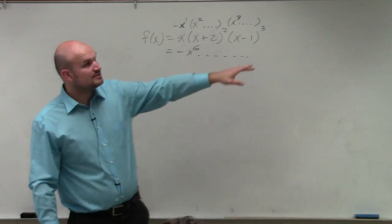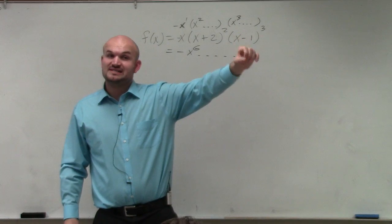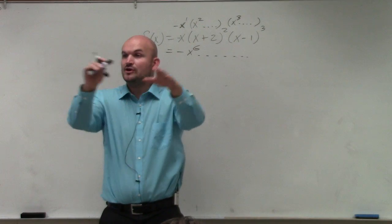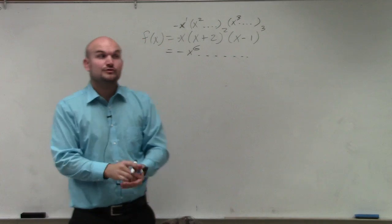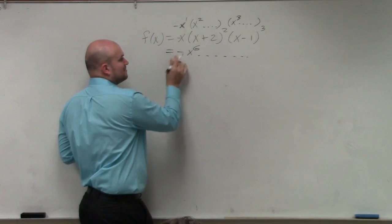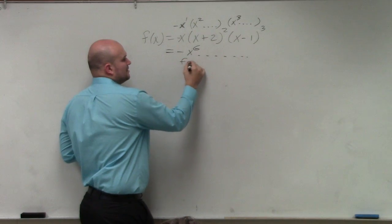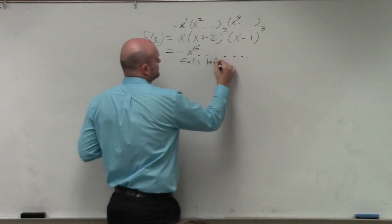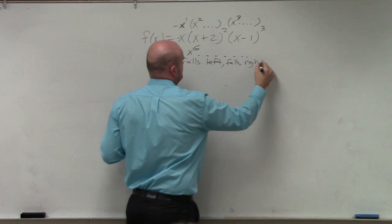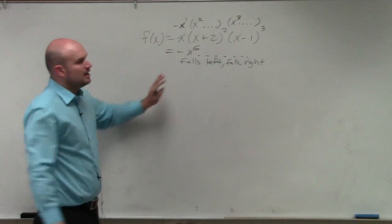Now, this is an even degree. So therefore, it's like the quadratic. If it's even and positive, we know the graph opens up and up. If it's even and negative, we know it goes down and down. You do need to know how to write limit notation. So make sure you go back and study that. But in this case, we're just going to use falls left and falls right. OK. And I'll come back to that in a second.